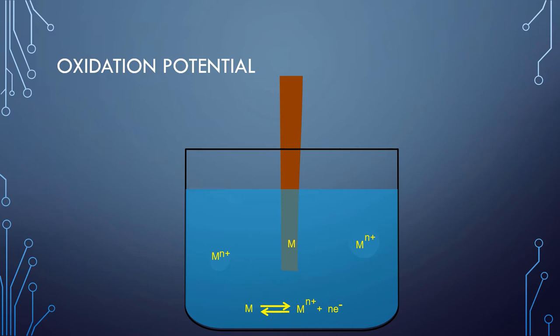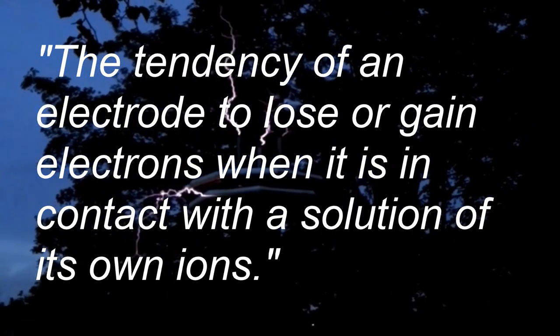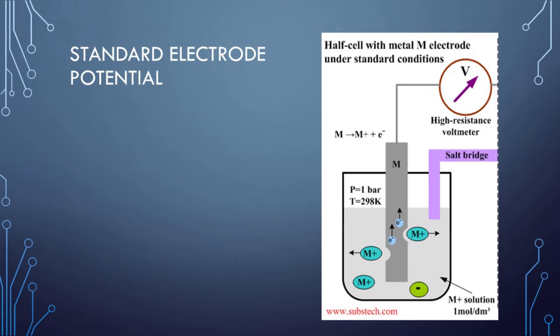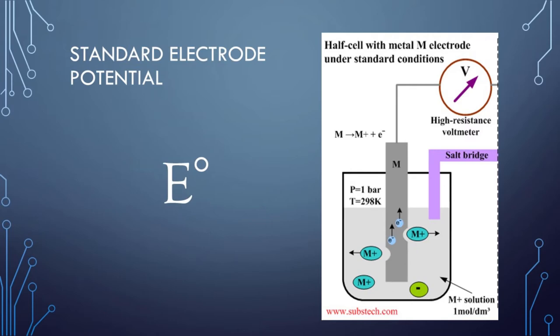Thus, electrode potential can simply be defined as the tendency of an electrode to lose or gain electrons when it is in contact with a solution of its own ions. If in the half cell the metal rod is suspended in a solution of one molar concentration and the temperature is kept at 298 K (25°C), the electrode potential is called the standard electrode potential, represented by E°. It is the electrode potential measured at standard conditions. If a gas is involved, the standard conditions are 1 atmospheric pressure and 298 K.